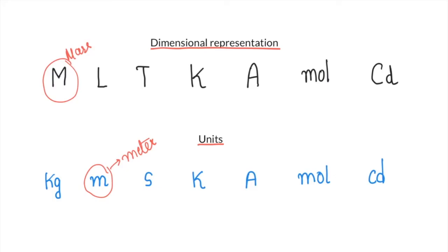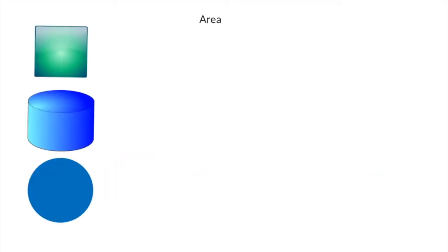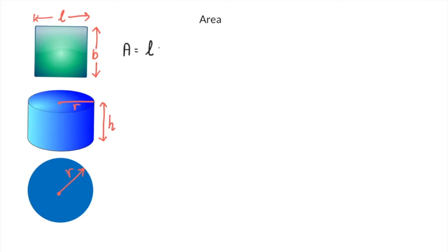Now let us look at some physical quantities with their dimensional formulas and units. Our first dimensional formula is for area. A square has length and breadth. Area of a square is length × breadth. Area of a cylinder (surface area) is 2πrh. Area of a circle is πr².